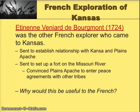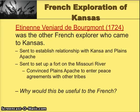The next French explorer came several years later: Bourgemont in 1724. He was sent to establish a relationship with the Kansa and also the Plains Apache, which are noted on a map in your text. He was also sent to set up a fort on the Missouri River. Another key idea is that he convinced the Plains Apache — who were a warring tribe starting conflicts all over the Plains — to enter into a peace agreement with other tribes. Think about why this would be useful to the French: to have the Plains Apache end their warfare with other tribes.